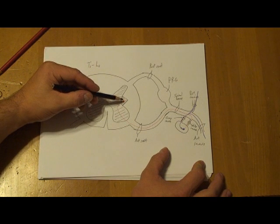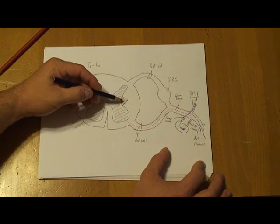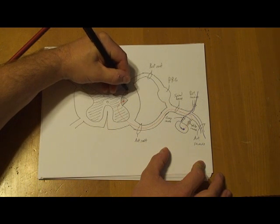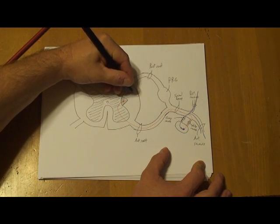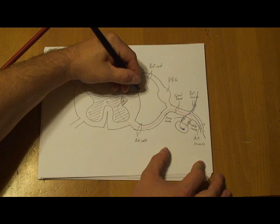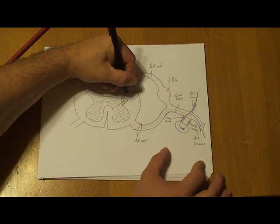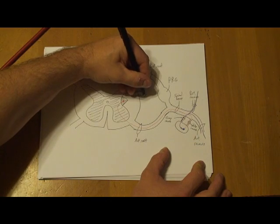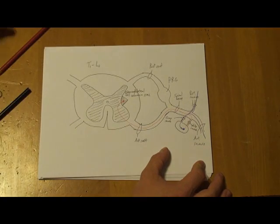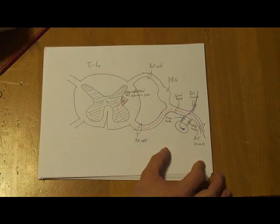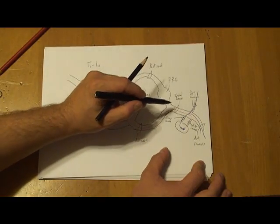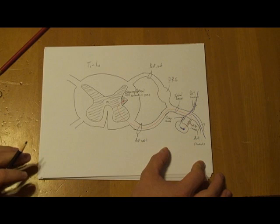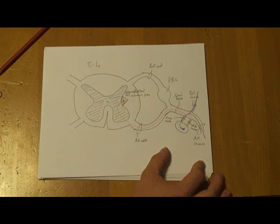The same thing happens throughout the first step. The first step never varies. You always have a sympathetic presynaptic cell body located in the intermedial lateral cell column, which will be henceforth called the IML to save on time. From there, it travels through the anterior root to the spinal nerve, to the white ramus, to the perivertebral ganglia.